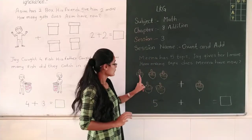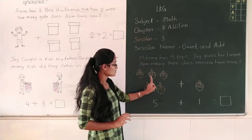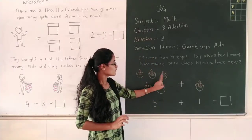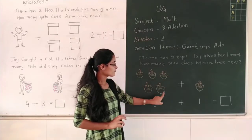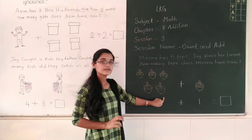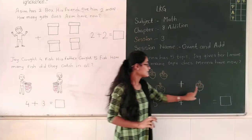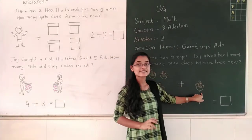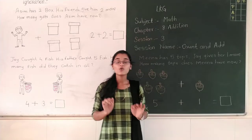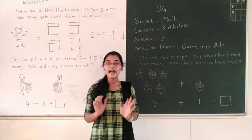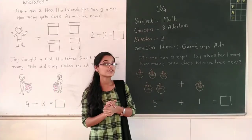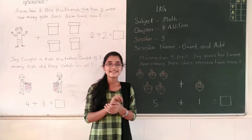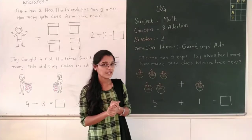1, 2, 3, 4, 5 and 6. So now Meena has 6 tops. How many tops? 6 tops.